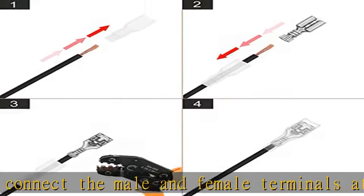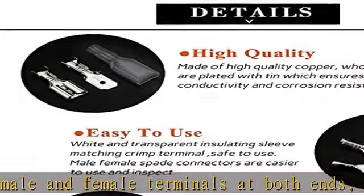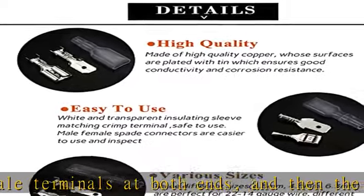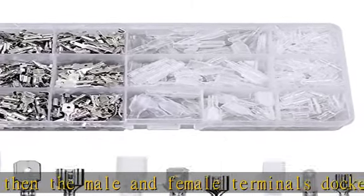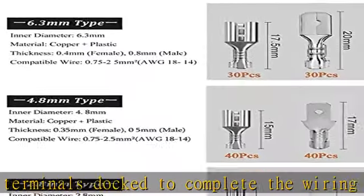What you get in this kit: you will get 480 pieces in total. Non-insulated mixed male and female spade crimp terminal connector kit including 2.8mm, 4.8mm, 6.3mm type, comes with insulating sleeves safe to use.